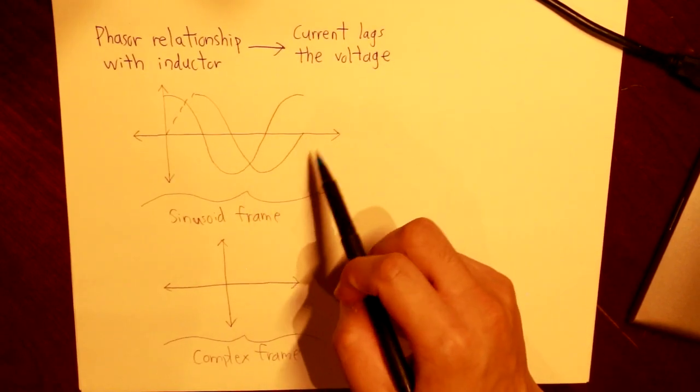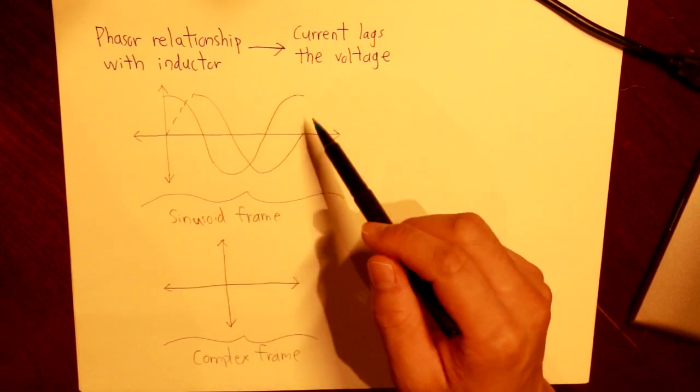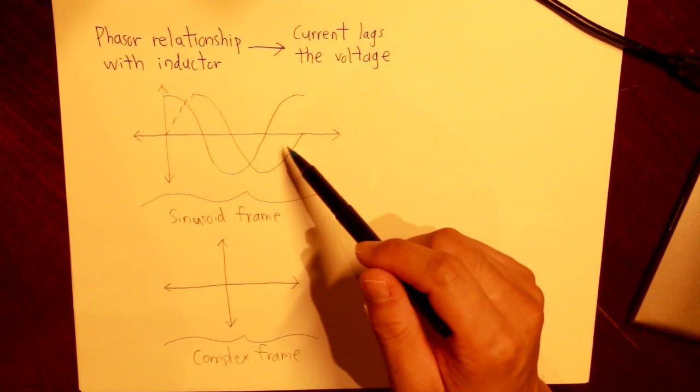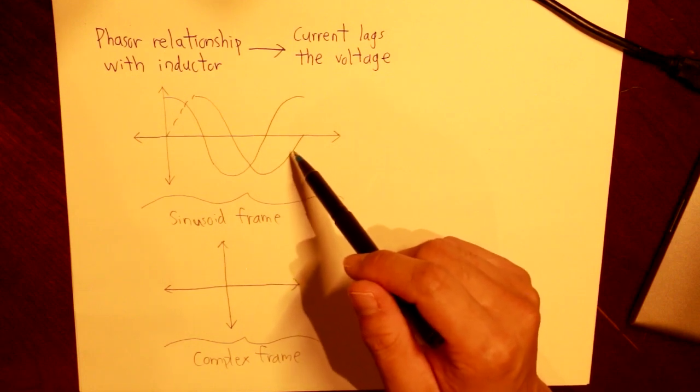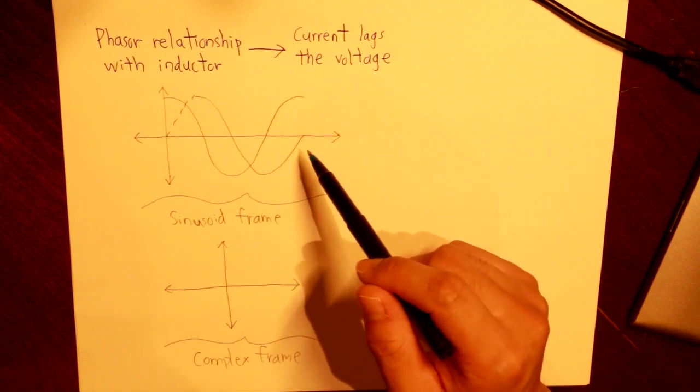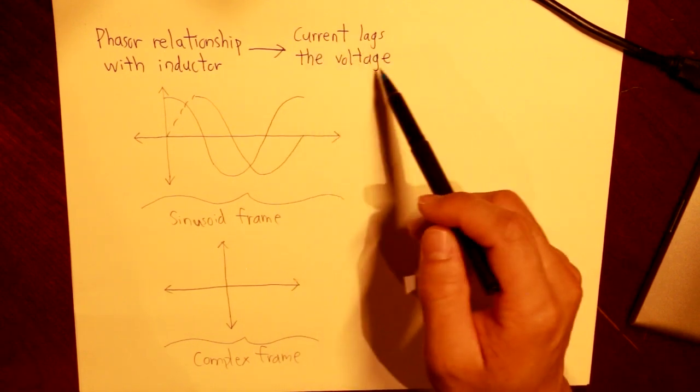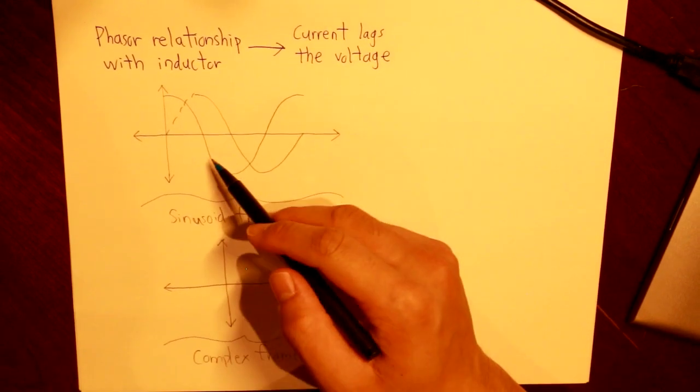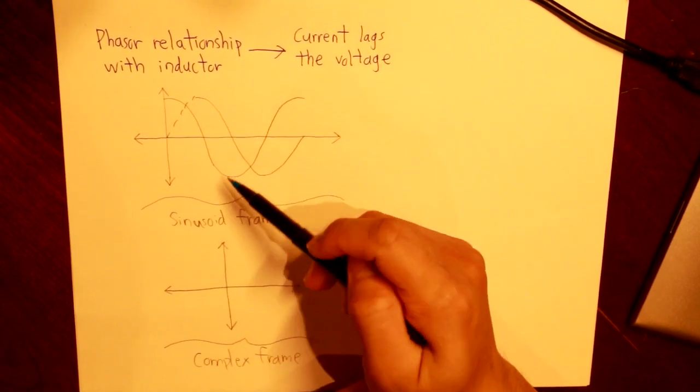So let's focus on the sinusoid frame. So we have these two phase waves again, and their phase difference will be 90 degrees. But now, since current lags the voltage, this is the current wave.